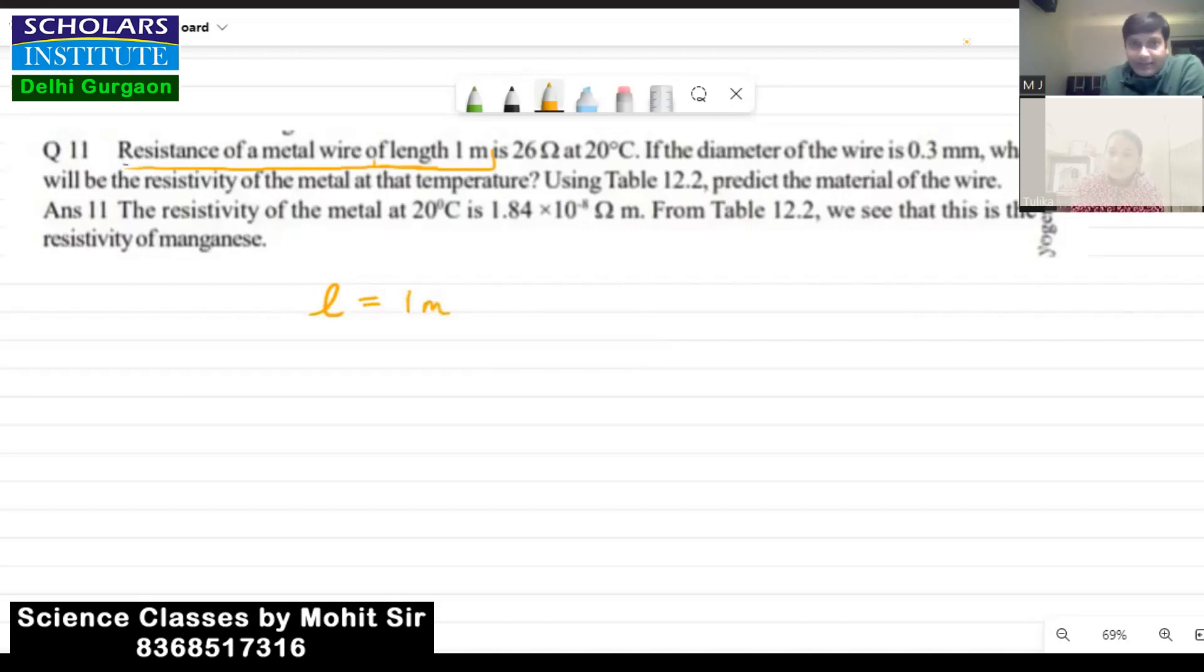And the resistance is given to us as 26 ohm, so resistance R is given to us 26 ohms at 20 degree celsius. This is temperature, we don't need to worry about this in this numerical. If the diameter of the wire, so diameter of the wire is given to us.